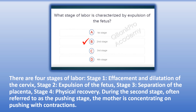The correct answer is B. Second stage. Explanation: There are four stages of labor. Stage 1: effacement and dilatation of the cervix. Stage 2: expulsion of the fetus. Stage 3: separation of the placenta. Stage 4: physical recovery. During the second stage, often referred to as the pushing stage, the mother is concentrating on pushing with contractions.